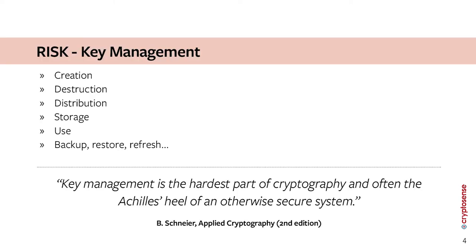The first risk I want to talk about is key management. When people talk about cryptography, they often think about algorithms and clever research around cryptographic algorithms. But in reality, what we see at CryptoSense going wrong is more often than not key management. Key management encompasses everything associated with the full life cycle of a key — its creation, the way it's generated, and being sure that we've destroyed it and made it unavailable.